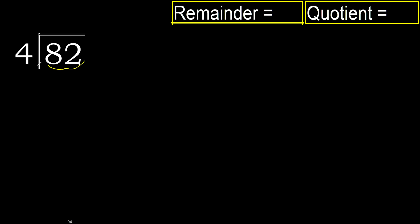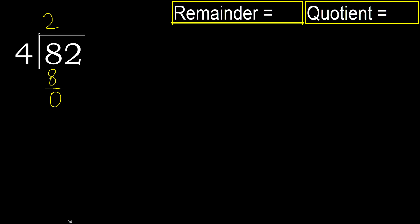82 divided by 4. 8 is not less, therefore with 8: 4 multiplied by which number is nearest to 8 but not greater? 4 multiplied by 3 is 12 — 12 is greater. Multiply by 2 is 8. 8 is not greater. 8 minus 8 is 0.